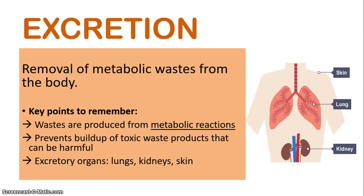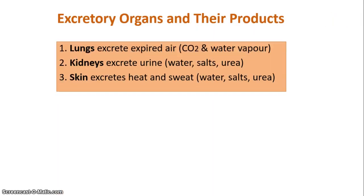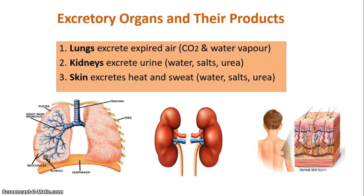The key excretory organs you need to remember include the lungs, the kidneys, and the skin. First, the lungs are responsible for excreting expired air — the air that we breathe out. This air contains carbon dioxide and water vapor, which are produced from the process of respiration in our cells. We need to remove that buildup of carbon dioxide, so when we breathe out we are excreting that carbon dioxide.